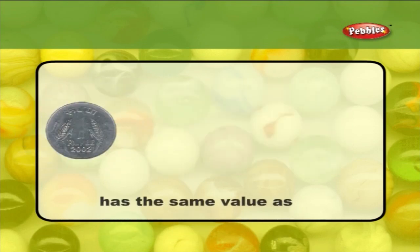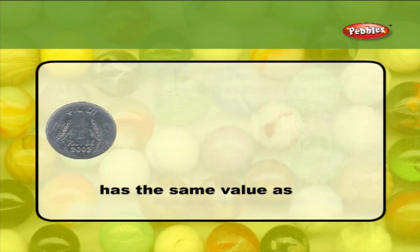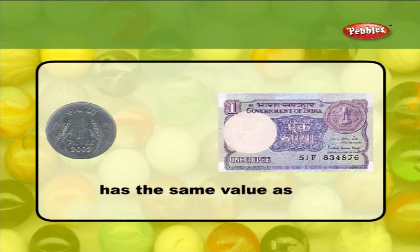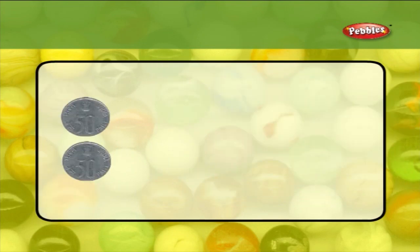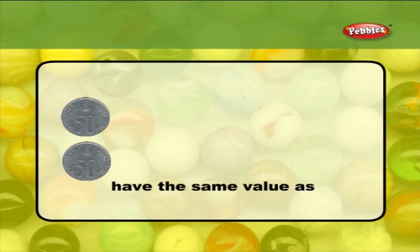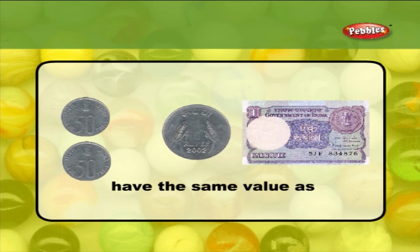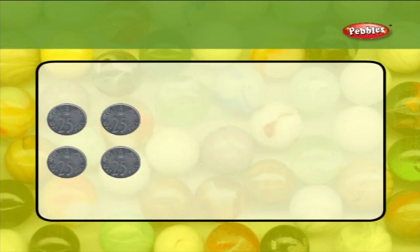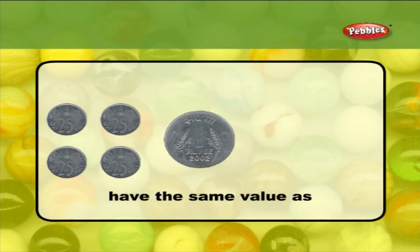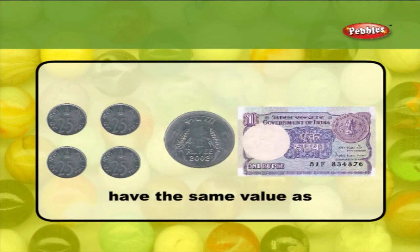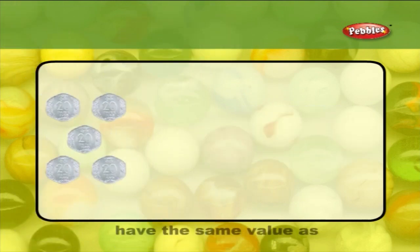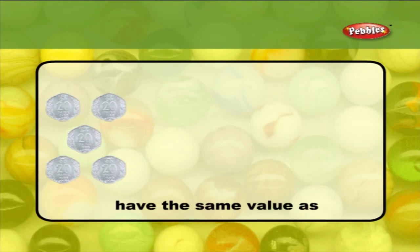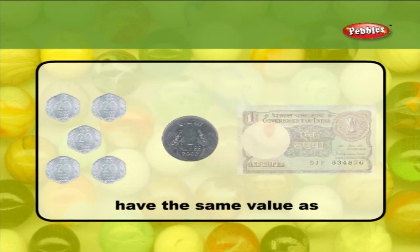A 1 rupee coin has the same value as a 1 rupee note. Two 50 paise coins have the same value as a 1 rupee coin or note. Four 25 paise coins have the same value as a 1 rupee coin or note. And five 20 paise coins have the same value as a 1 rupee coin or note.